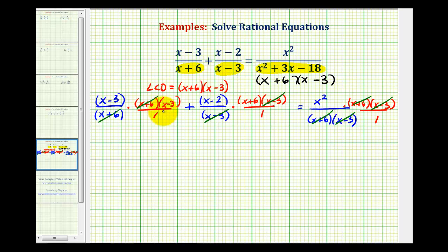Now we'll determine these products, and then solve the resulting equation. Notice here we have the quantity x minus three, times the quantity x minus three, plus here we have the quantity x minus two, times the quantity x plus six. And on the right side we just have x squared.